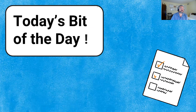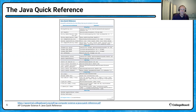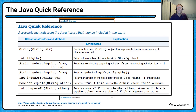Our bit of the day is the Java Quick Reference sheet. This is a sheet you get as part of your AP exam, available for both the multiple choice and free response questions. It's very important. I'll blow up individual parts. The top covers the String class — things from the Java library that may be included on the exam. Have this right next to you the entire time you're taking the AP exam; it's provided as part of your exam materials.